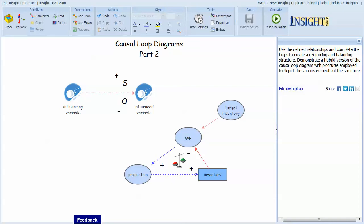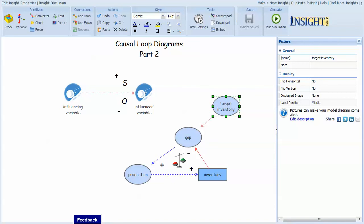Balancing loops are goal-seeking loops. This is the goal. And this structure is attempting to maintain or bring the inventory into balance with the target inventory.